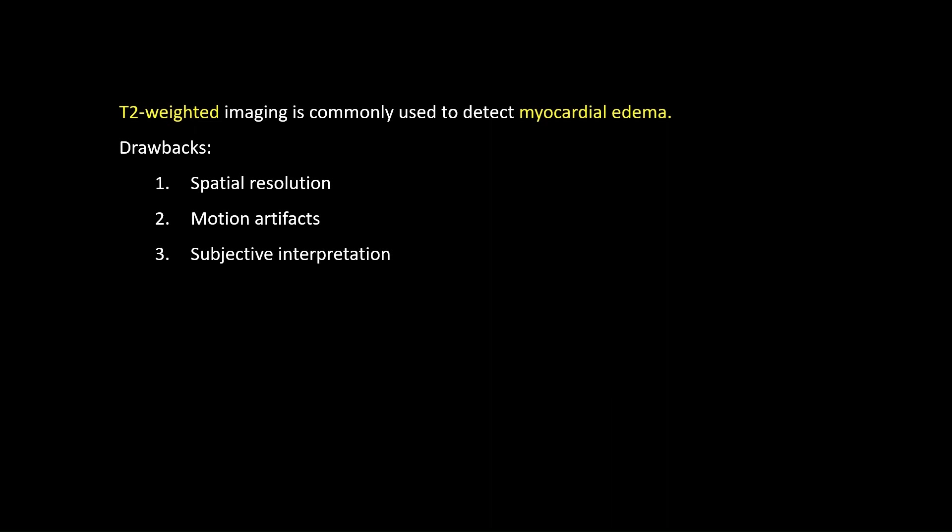Conventional T2 images have certain drawbacks: spatial resolution is not that good, they are very prone to motion artifacts, and interpretation is subjective since the data is not quantified. To quantify this T2 data, we do T2 mapping, which we will talk about next.